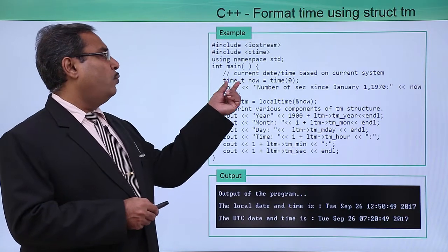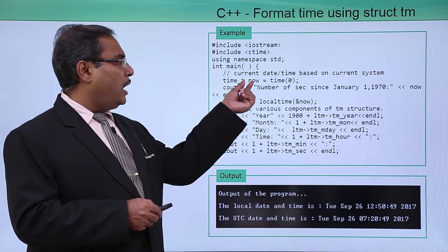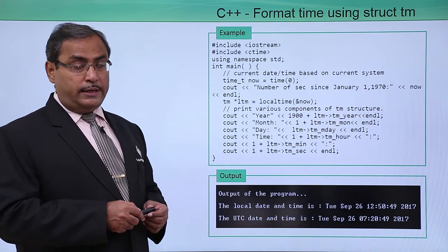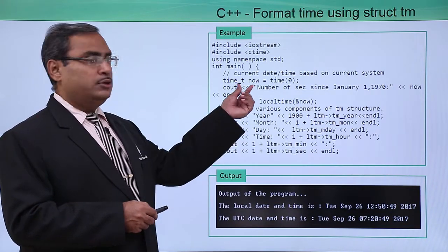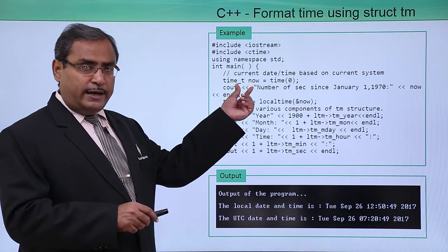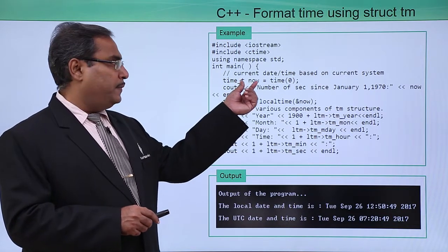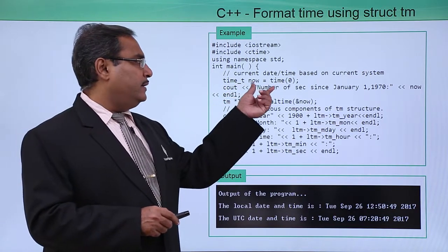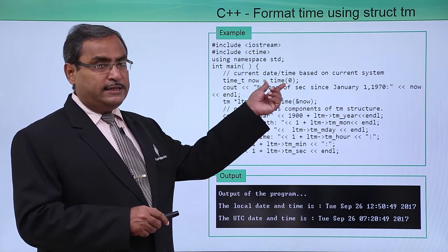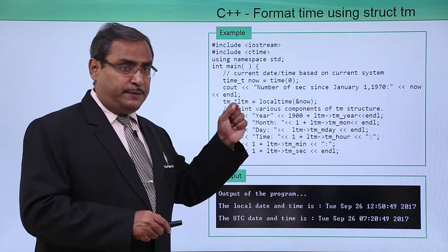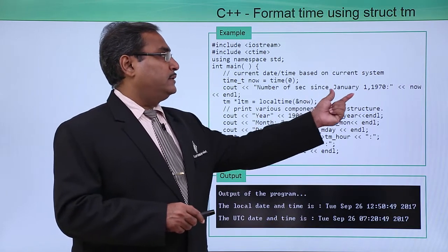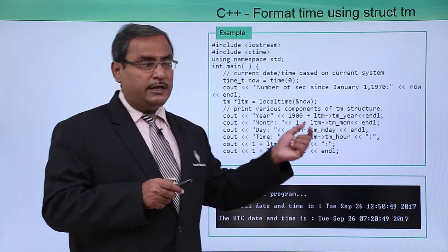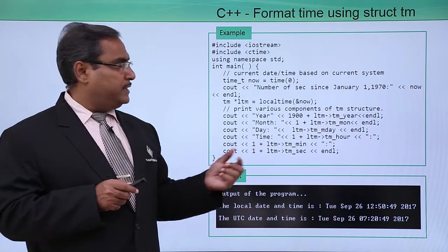Here we are defining a time_t type variable 'now' equal to time(0). It will count the number of seconds from January 1, 1970 until when you run this program and execute this instruction, depending upon the respective time and date. That number of seconds will be assigned to 'now'.